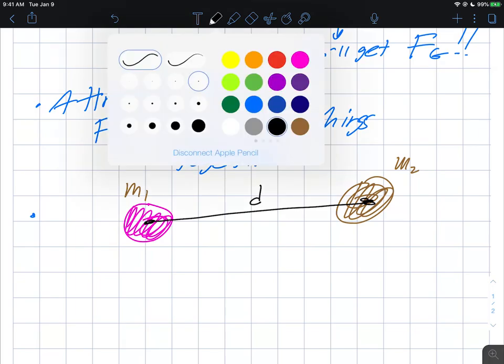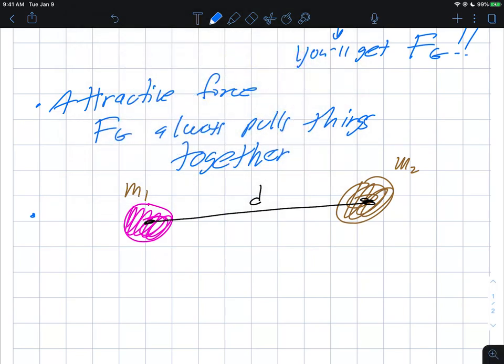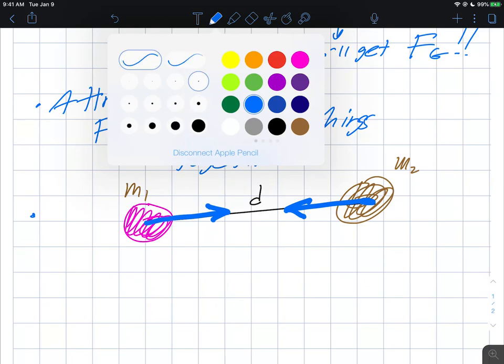In this case here, gravity would be on and m₂ would be pulling m₁ towards it like that, and m₁ would be pulled towards m₂ like that. They both exert a mutual gravitational force on each other.